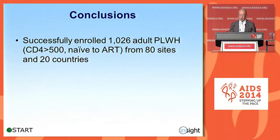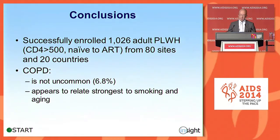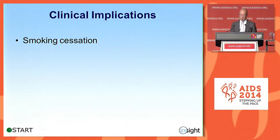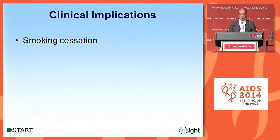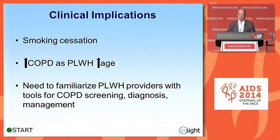In conclusion, we successfully enrolled over 1,000 patients with HIV from 80 sites in 20 countries into a spirometry sub-study. We found that COPD was not uncommon, being present in 6.8% of this sample. COPD appeared to relate strongest to smoking and aging, and it varied by global region. The clinical implications highlight the importance of smoking cessation, especially when it comes to COPD. As patients with HIV continue to age, we're likely to see more and more COPD emerge, making it important to familiarize HIV providers with the tools for COPD screening, diagnosis, and management.